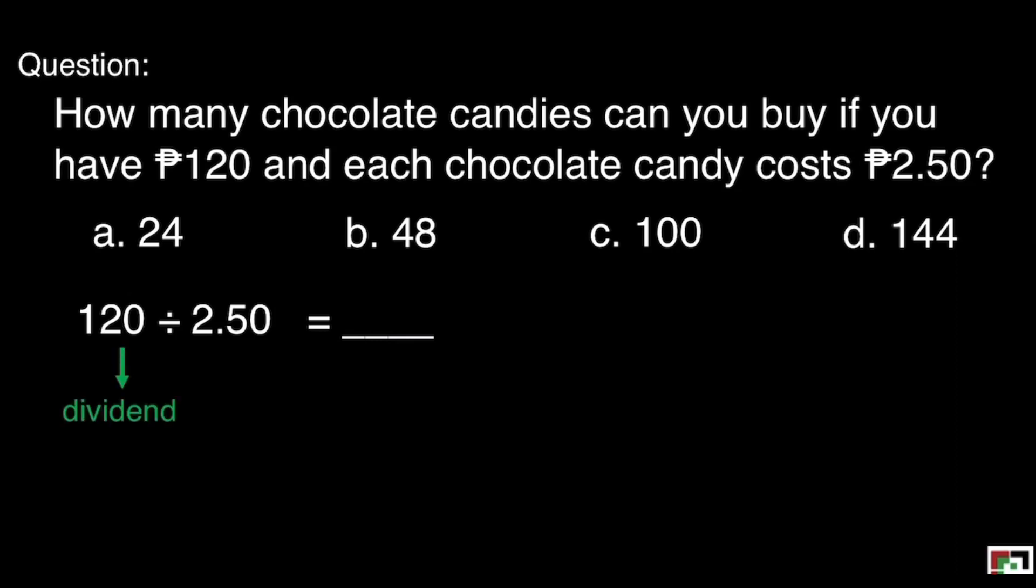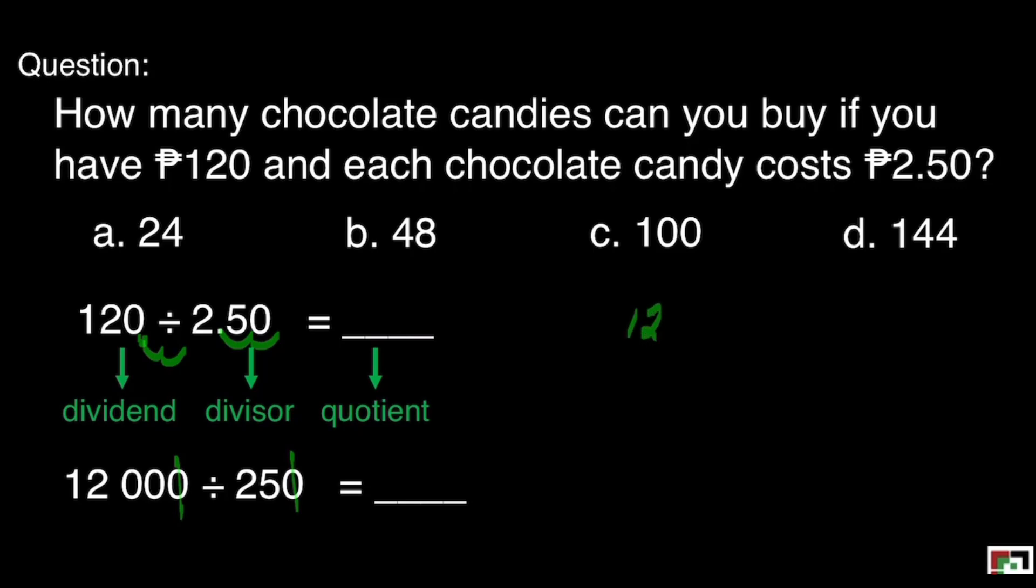Our equation for this question is 120 divided by 2.50. We have to take note our dividend, divisor, and quotient. We need to make sure that the divisor is converted into whole number by moving two decimal places to the right as well as with our dividend. Our new equation is 12,000 divided by 250. But we can still cancel the two 0's there. What we have now is 1,200 divided by 25.